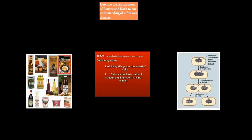You guys may not be familiar with this - this is the Cell Theory, which came about in the 1800s. By the 1800s we knew that all living things are composed of cells - that's one part of the Cell Theory - and that cells are the basic unit of structure and function in living things. But there's a third statement about the Cell Theory which was missing.